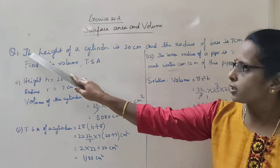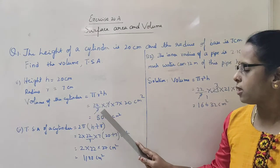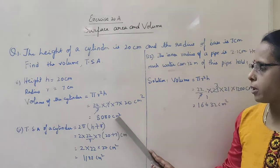How much is the height? The height of the cylinder is 20 cm. So 7 and 7 will get cancelled. Multiply 22 into 7 into 20, we get 3080 cm square.